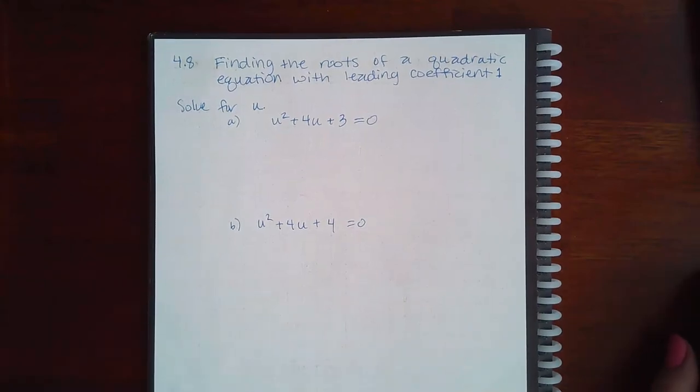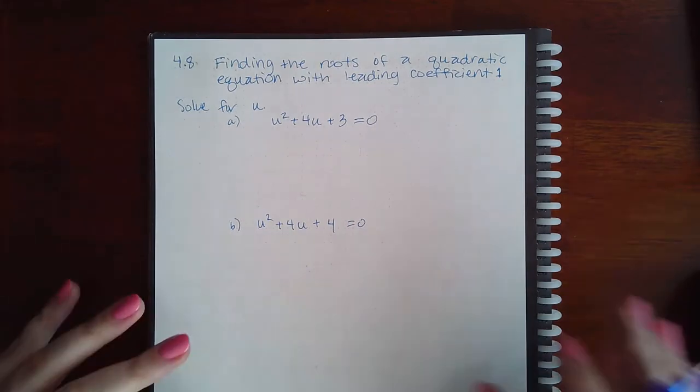Here we have 4.8: finding the roots of a quadratic equation with leading coefficient 1. Just like before, when you have a polynomial equal to 0, you need to factor that polynomial and then set each factor equal to 0.